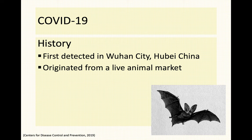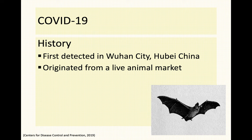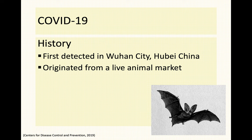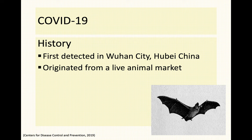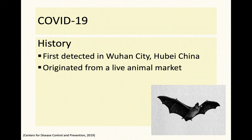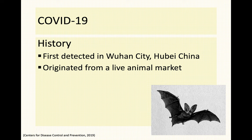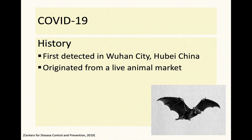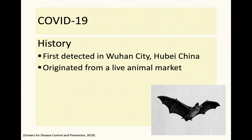It is believed that bats are the reservoir of SARS-CoV-2 because when they did the genomic sequence analysis of SARS-CoV-2, it showed that 88 percent was identified with two bat-derived SARS-like coronaviruses. When they studied the genetic makeup of SARS coronavirus 2, it was actually linked to two strains of coronavirus usually found in bats.